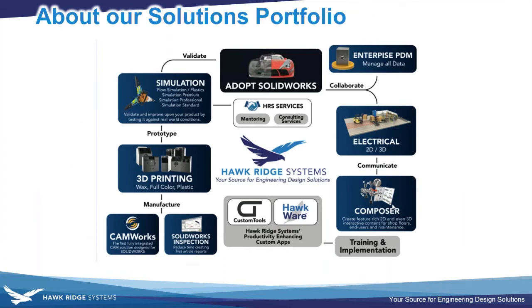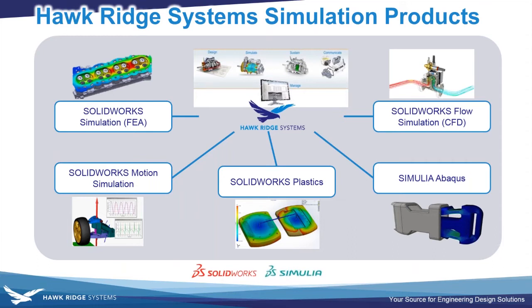Hawkridge Systems offers a wide variety of tools and solutions mostly stemming from a SolidWorks design environment. In the simulation realm, those include SolidWorks Simulation, SolidWorks Flow Simulation, Simulia Abaqus, and others. SolidWorks Simulation is an FEA finite element analysis tool to provide stresses, strength, and displacements on your model due to some sort of load. We also have SolidWorks Plastics, embedded in the SolidWorks environment, intended specifically for simulating the injection molding process and figuring out what your part will actually look like when it comes out of the mold.